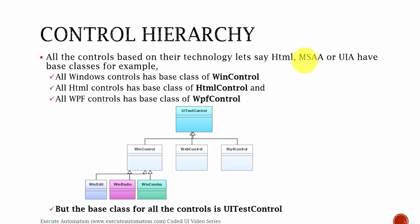We have already discussed about controls hierarchy in part 8. For each and every control — let's say for a Windows control, we will have, let's say, a WinEdit. For WinEdit, we will have a base class of WinControl, and similarly for WinControl the base class is UITestControl. So all Windows controls have a base class of WinControl. This is the hierarchy.